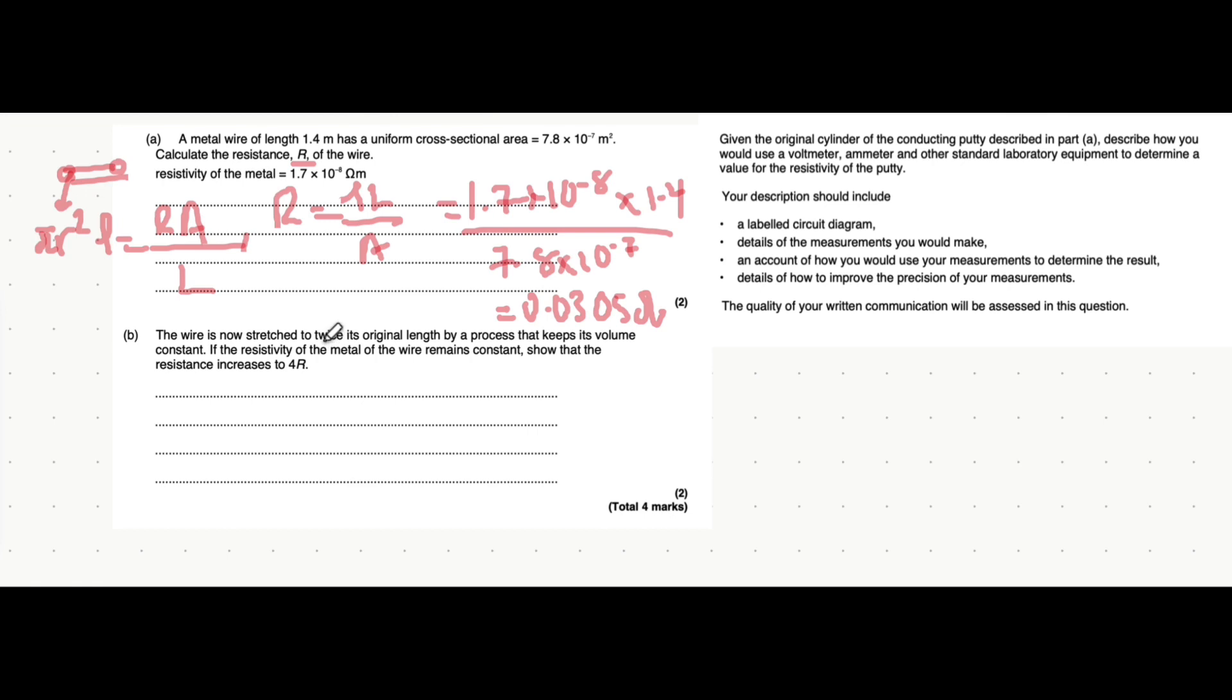It now tells you the wire is stretched to twice its original length by a process that keeps its volume constant. If the resistivity of the metal wire remains constant, it shows that the resistance increases to 4R. So, we're going to use this equation here. R equals rho L over A. It tells you that the resistance is what stays constant. It tells you the length is doubled. So, L becomes 2L. But then it wants you to show that the resistance increases to 4R.